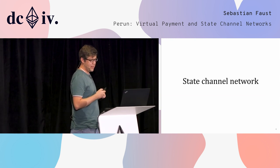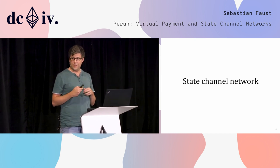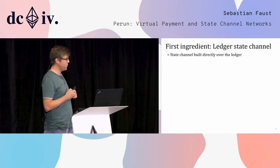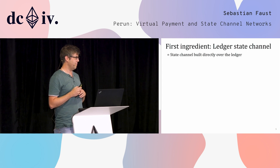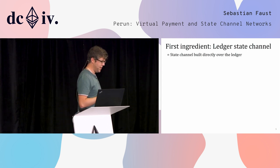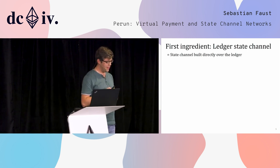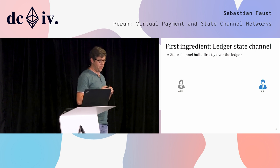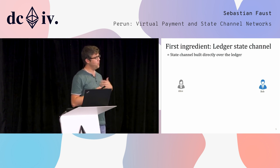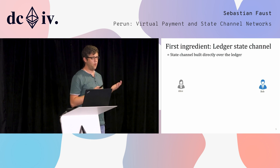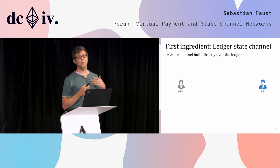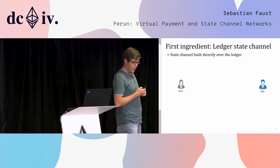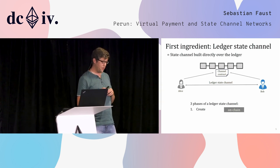What is a state channel network? I will show you our view at Perun. The basic ingredient — which you have already seen in several other talks — we call ledger state channels. Ledger state channels are built directly over the ledger. We have two parties, Alice and Bob, and they want to execute some contract off-chain — for example, a chess game, some other online game, a payment, or whatever. The ledger state channel works in three phases.